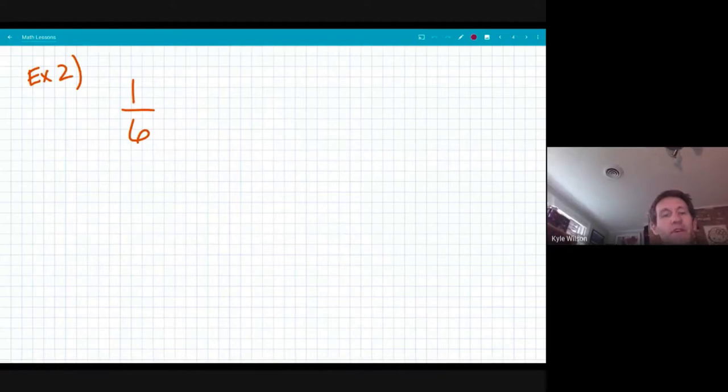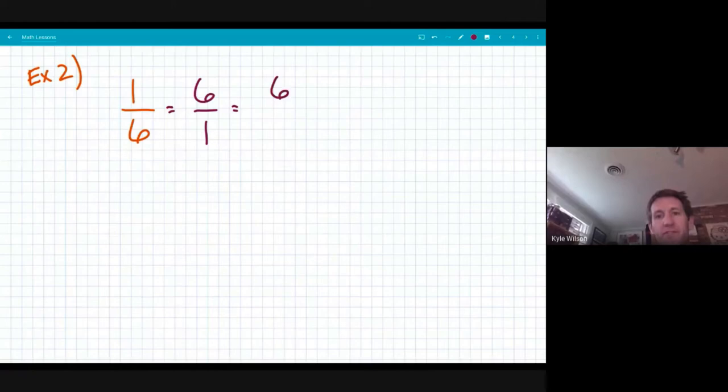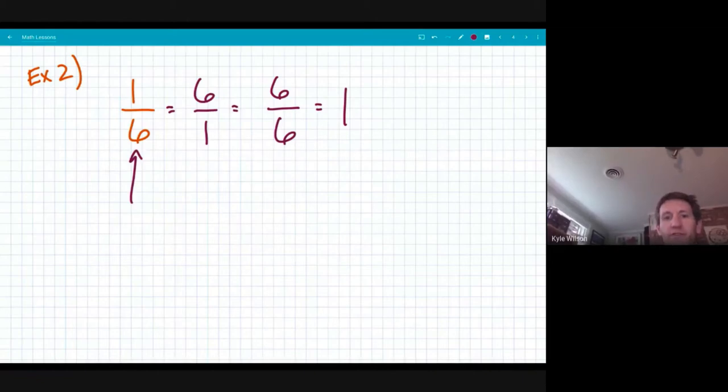The next example could be one sixth. What could I multiply together? Well, I could multiply together six over one. And that means one times six is six. Six times one is six. That answer is one. So my reciprocal of one sixth is six over one, but you'll always just call that six.